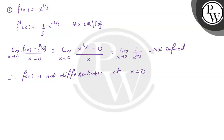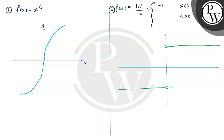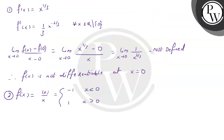For the second function, f(x) equals mod x divided by x: the value is minus one for x less than zero and one for x greater than zero. From the graph, the function takes a constant value over the interval (minus infinity, 0) and a constant value of one over (0, infinity). Since constant functions are differentiable, f(x) is differentiable and its derivative equals zero for every x in the domain D, where D is all real numbers except zero.